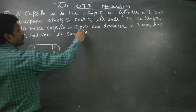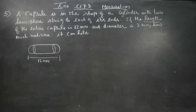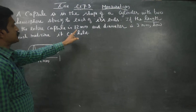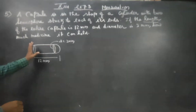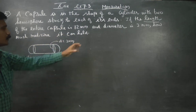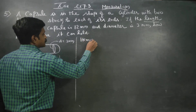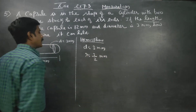The length of the entire capsule is 12 mm and the diameter is 3 mm. We need to find how much medicine it can hold. The diameter is 3 mm.